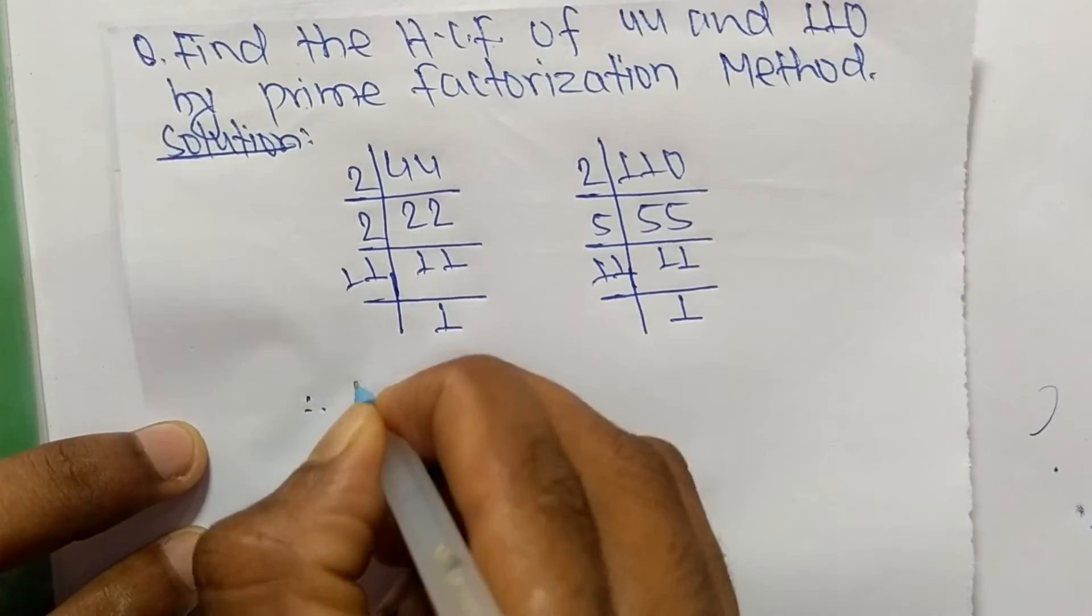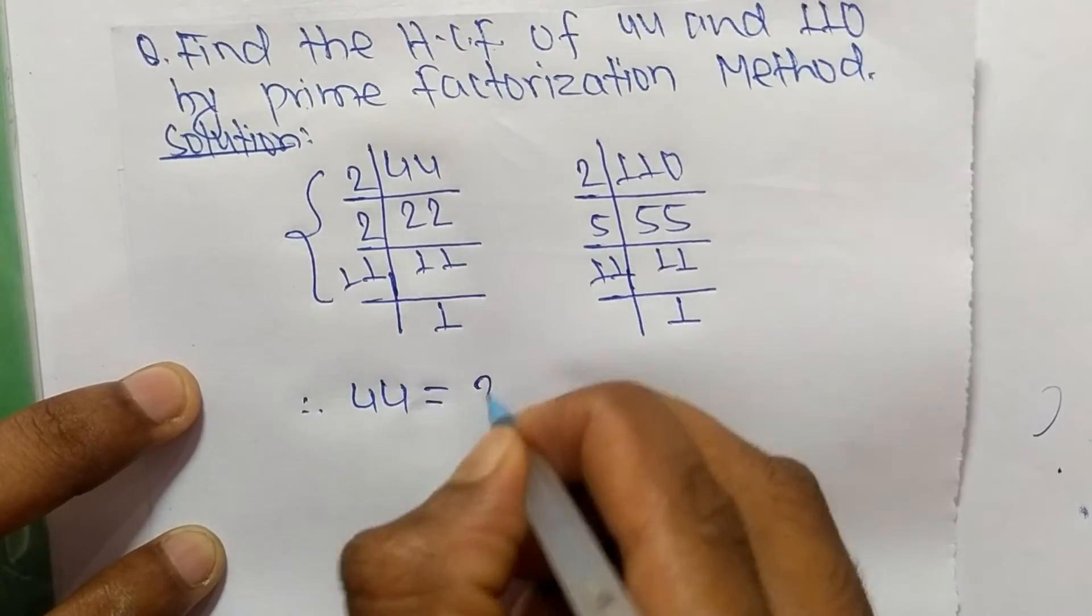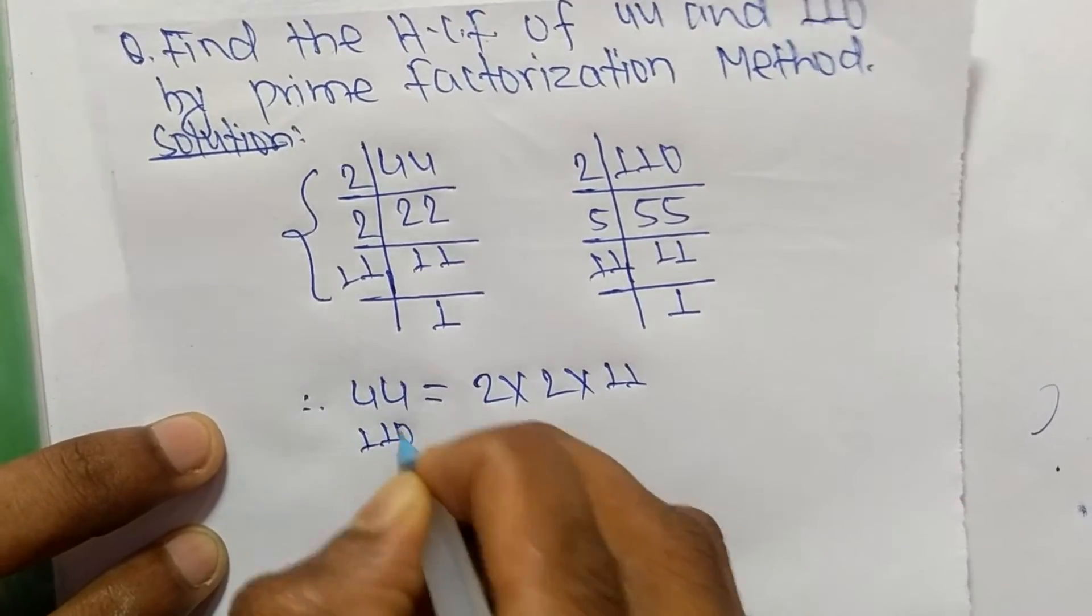factors, we can write 44 is equal to, from this part, 2 times 2 times 11. And 110